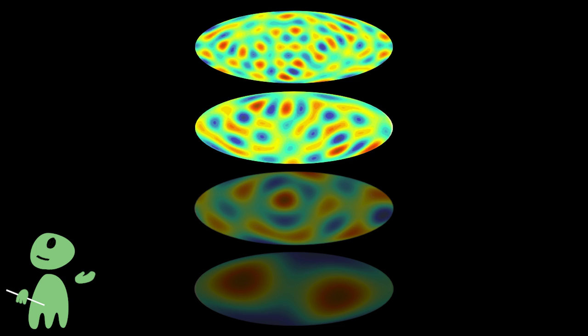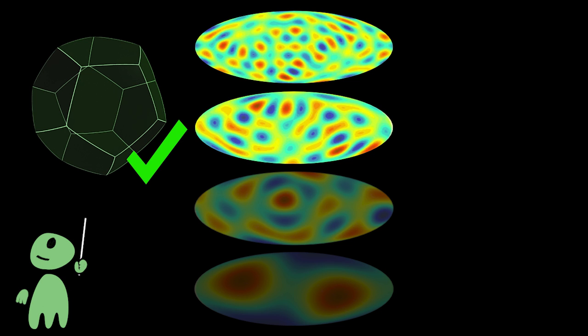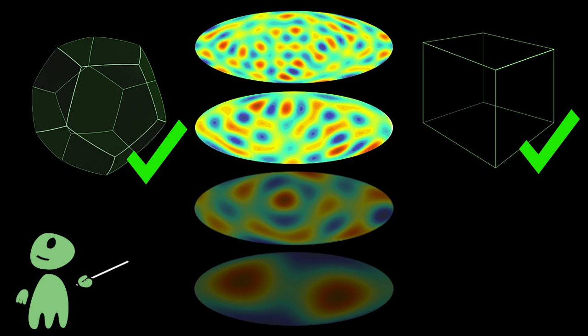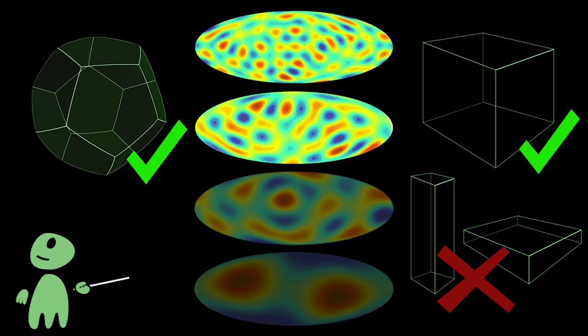The observed data seems to fit rather well with finite models like the Poincaré dodecahedral space and the flat hypertorus, better than with infinite models. It also seems to fit better with well-proportioned models, rather than ones with different sizes in different directions. This is far from being definitive proof, but it could be a hint that the universe might indeed be finite.